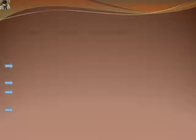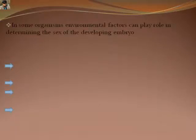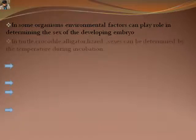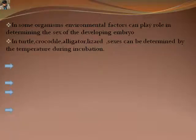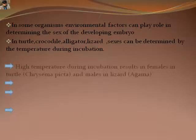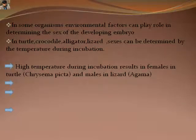In different organisms like turtles, crocodiles, and lizards, sex is determined by environmental factors like temperature. In some organisms like ants and honey bees, the embryo develops without the fertilization of egg cells — meaning the female alone can produce offspring. Some organisms can also change their sex as per requirements.